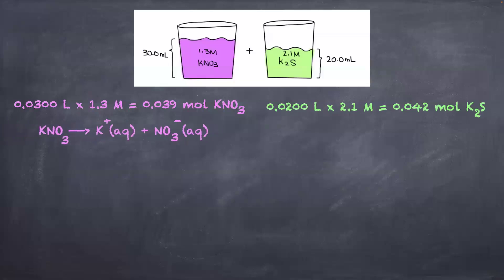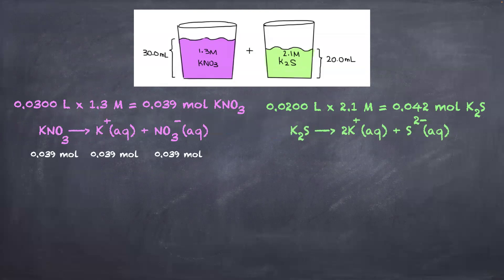The second step is to write the dissociation equation — or you can just look at the formula of KNO₃ and find the ratio of ions, but it's easier to write the dissociation equation. Then do the same for K₂S. We know that if 0.039 moles of KNO₃ exist, because one K⁺ and one NO₃⁻ are produced, their moles will be exactly the same based on the mole-to-mole ratio.